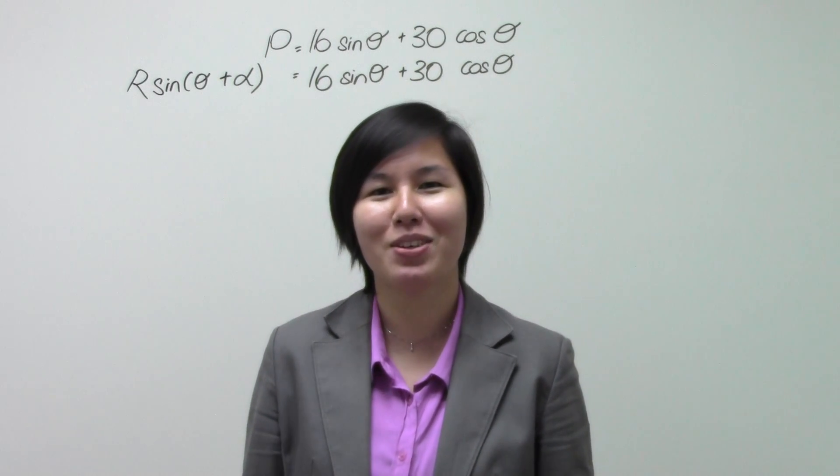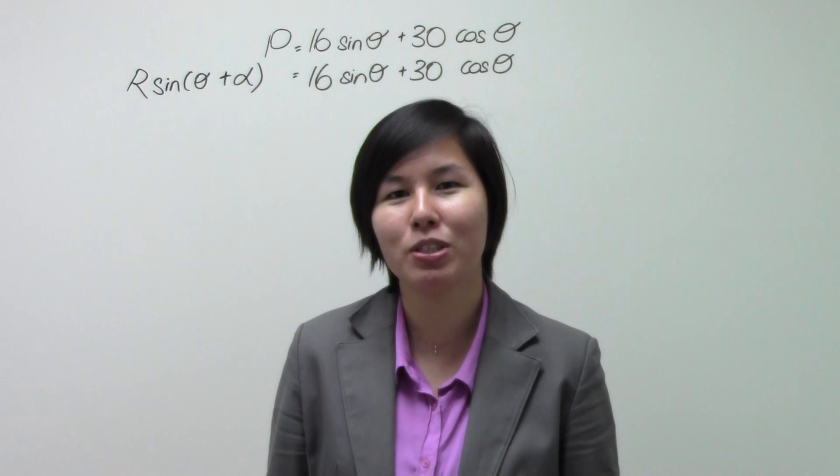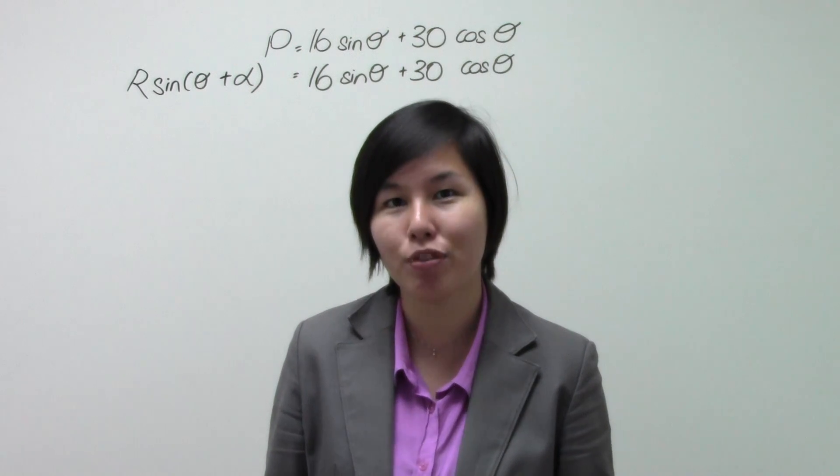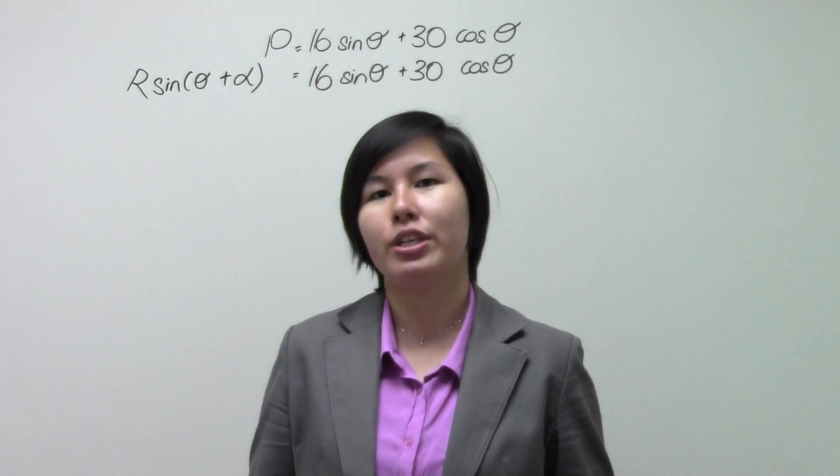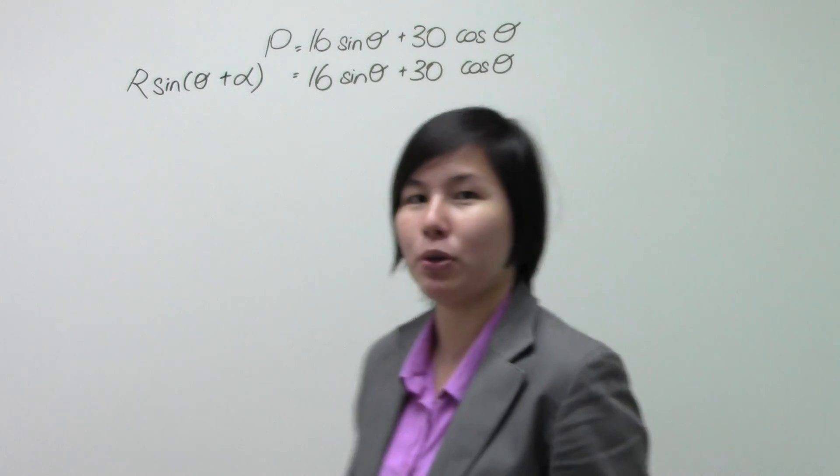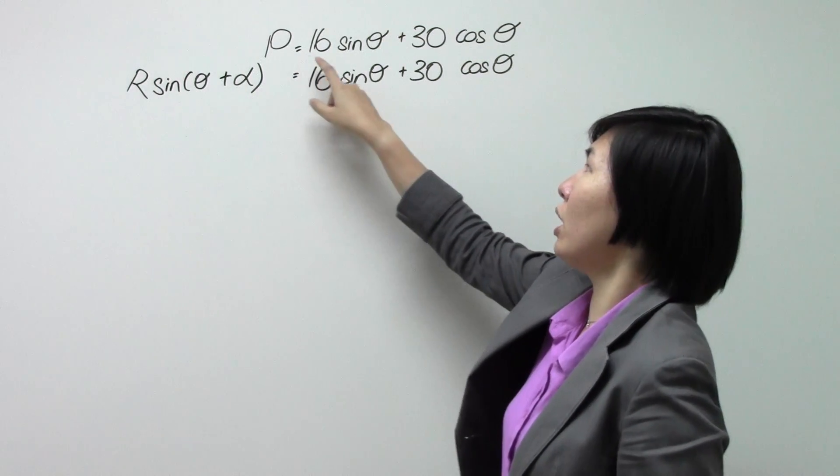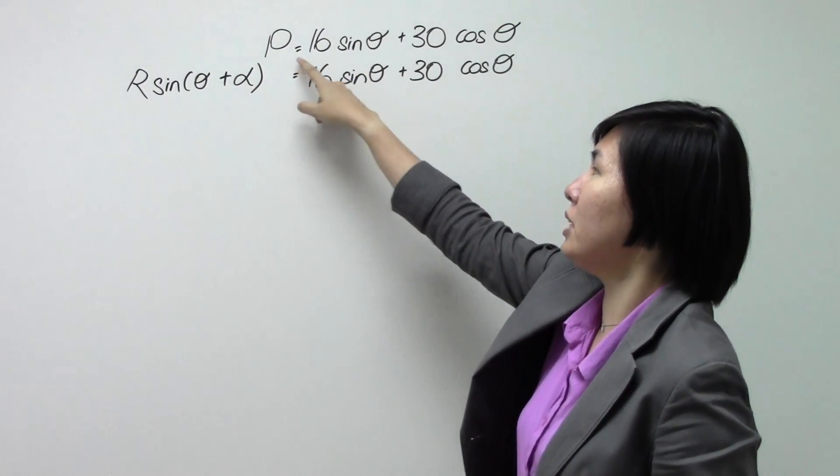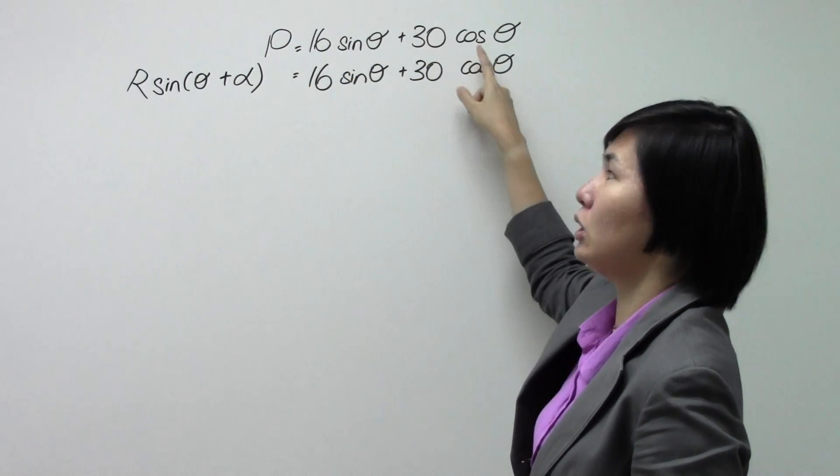Hi, I'm Eileen from SingaporeOlevelnext.com. In today's video, I'm going to share with you how to find the R formula. This particular section is found in additional mathematics and let us take a look at an example on the board. Now this is the equation that I'll be using that you see over here. P equals to 16 sine theta plus 30 cosine theta.